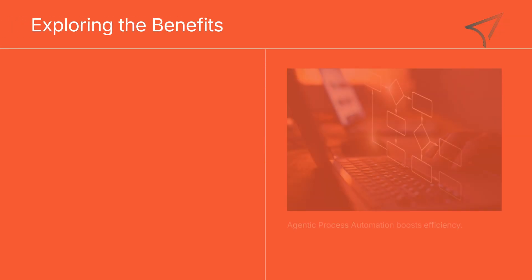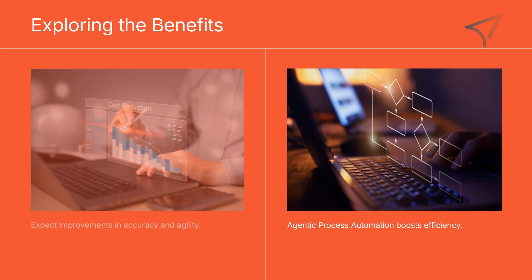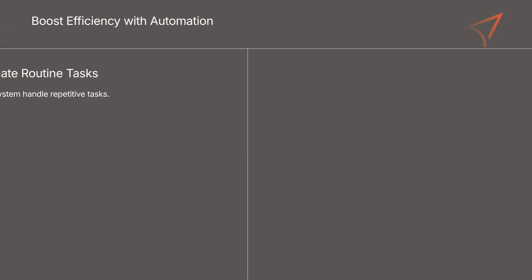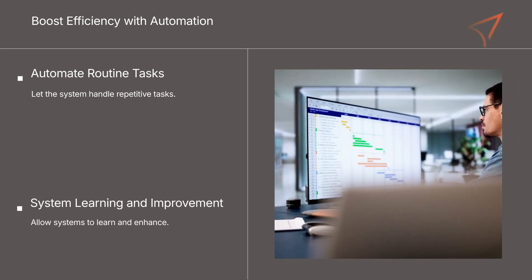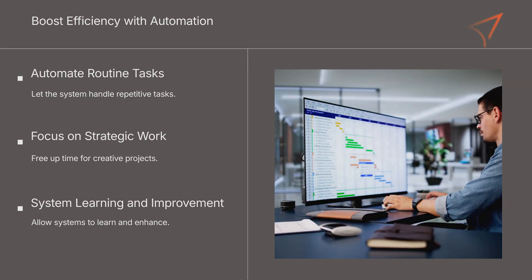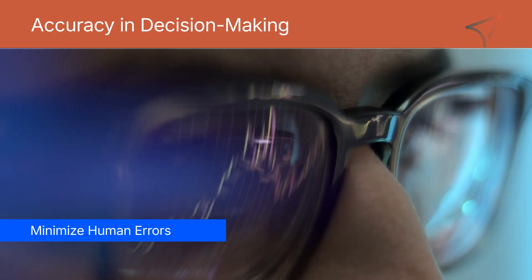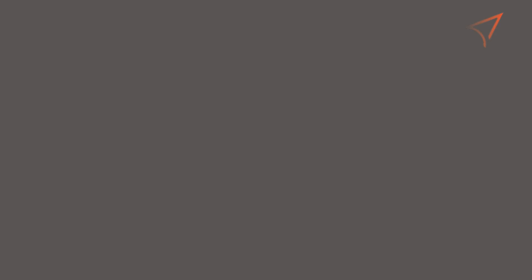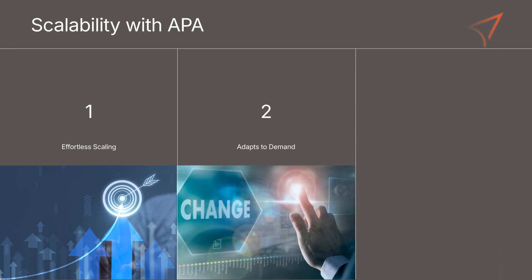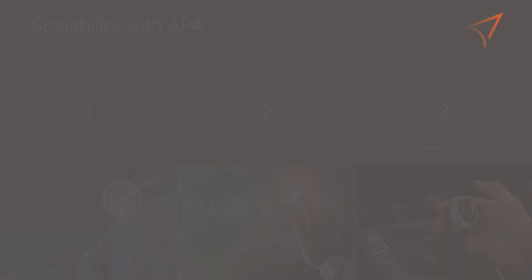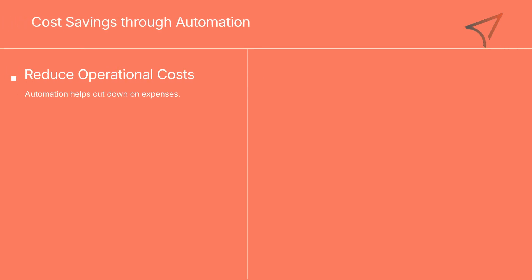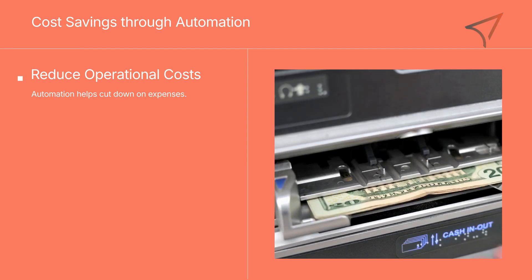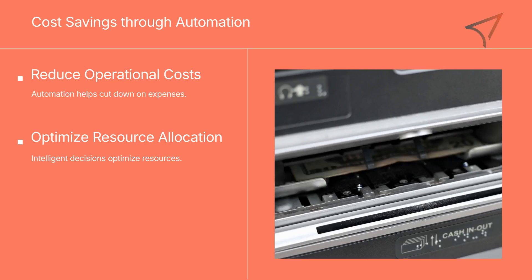Let's talk about the benefits. With agentic process automation, businesses can expect significant improvements in efficiency, accuracy, and overall agility. Efficiency: by automating routine tasks and allowing the system to learn and improve, your team can focus on more strategic, creative work. Accuracy: human errors are minimized when decision making is driven by real-time data and advanced algorithms. Scalability: as your business grows, APA scales effortlessly, adapting to increased demand without the need for constant manual adjustments. Cost savings: automation reduces operational costs and intelligent decision making helps optimize resource allocation, ultimately boosting your bottom line.